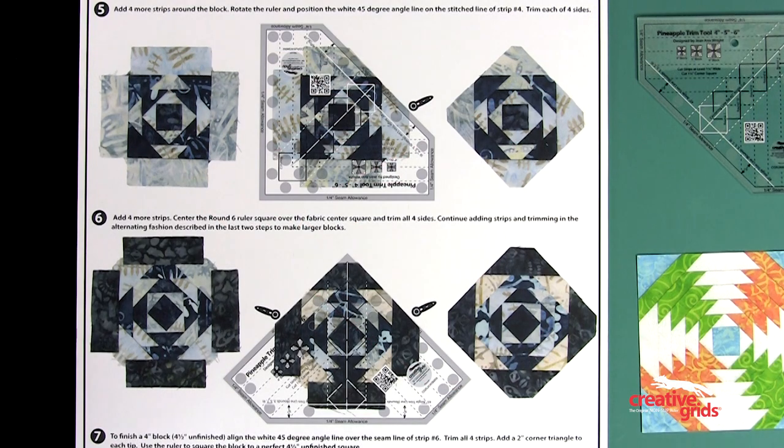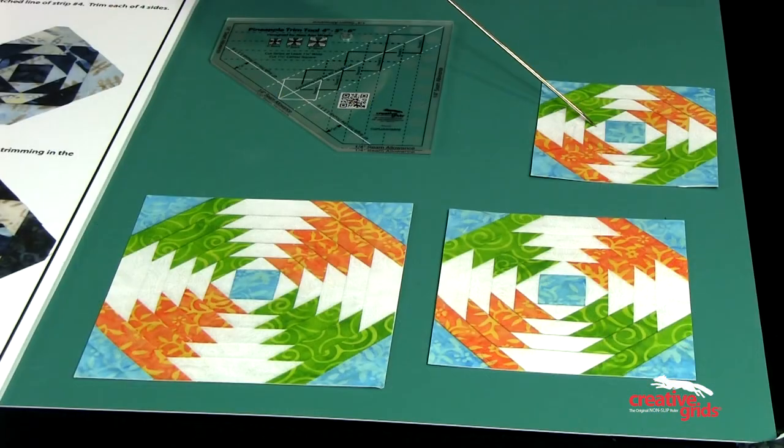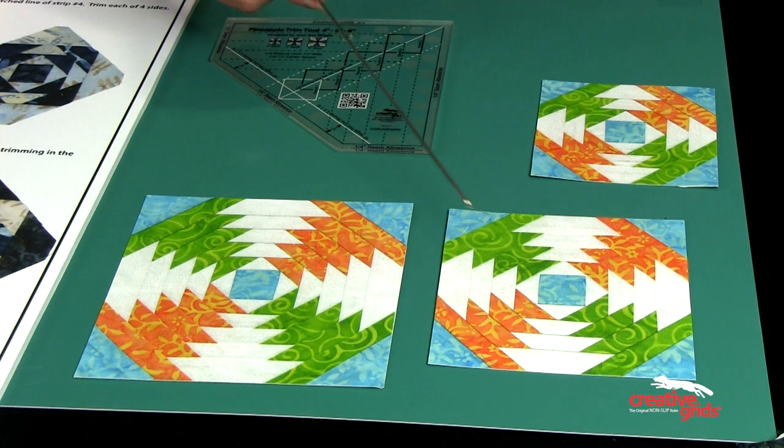Continue these last two steps, repeating for rounds five and six to make a finished four inch block. If you would like to make larger blocks, continue to repeat the last two rounds until the block is the size you wish.